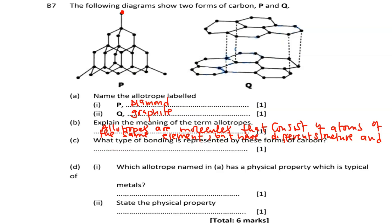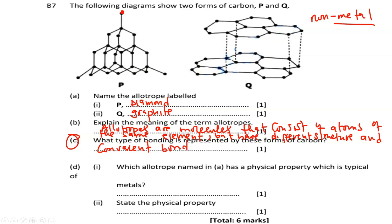The next question asks: what type of bond or bonding is represented by these forms of carbon? Carbon is a non-metal. You only have carbon atoms in these forms — all these are carbon atoms attached to each other. So if it's between non-metal and non-metal, you know that it's covalent bonding, and therefore the bond here is called covalent bond.